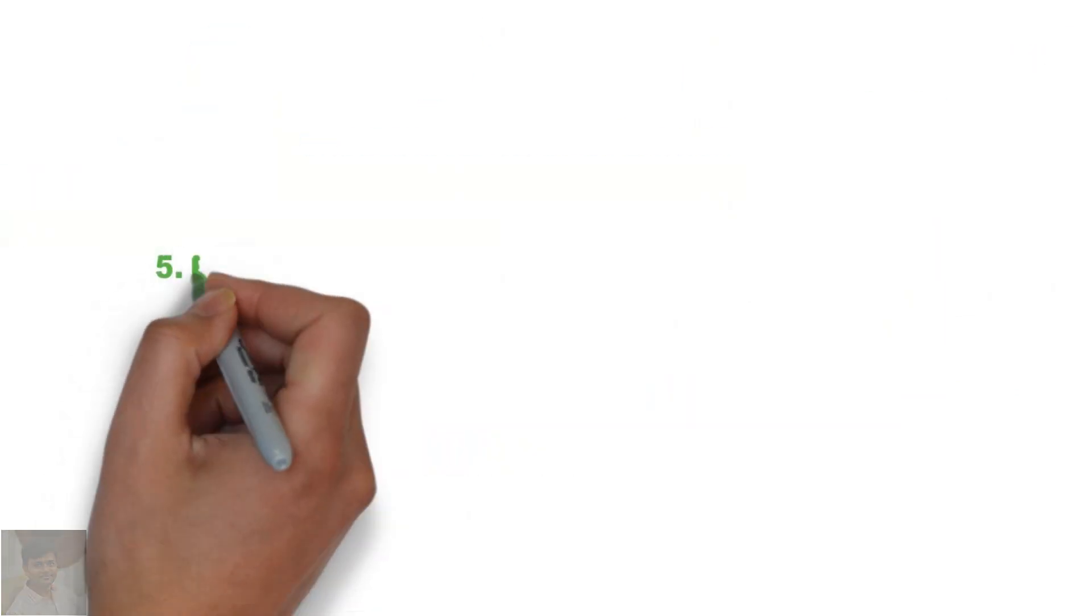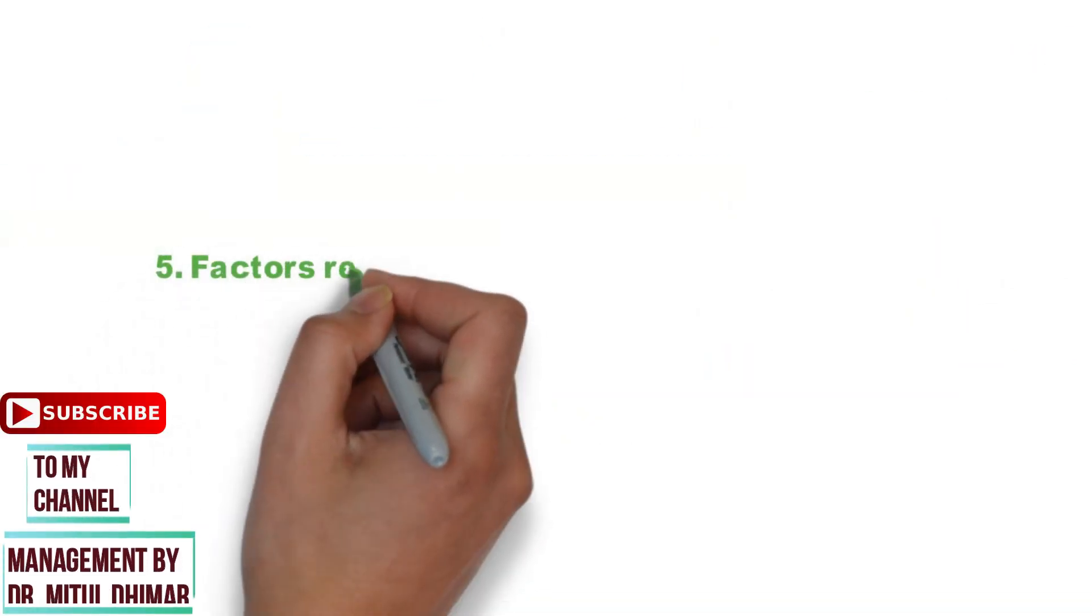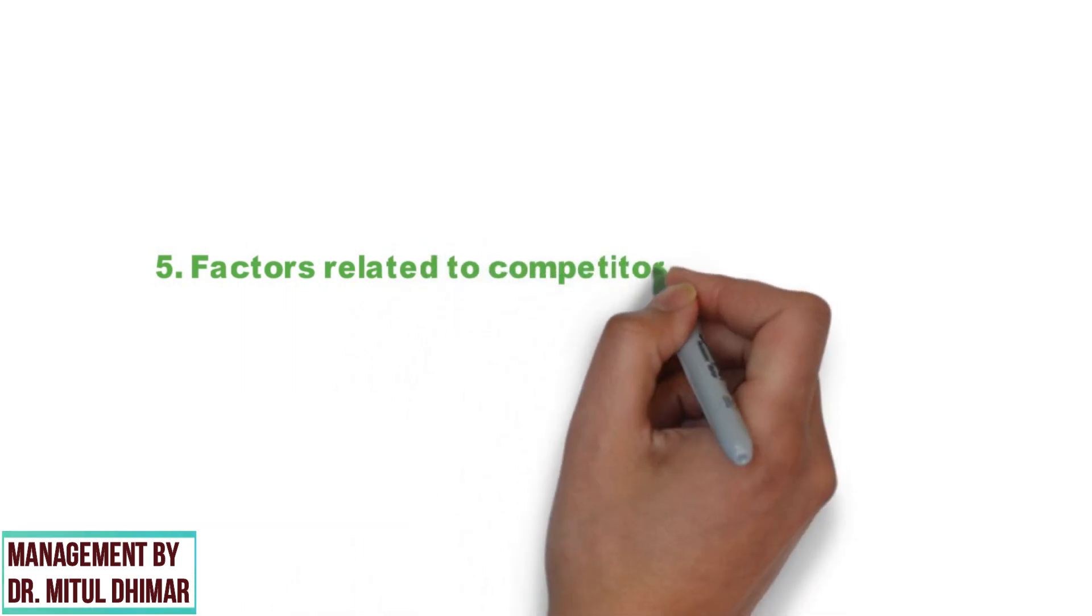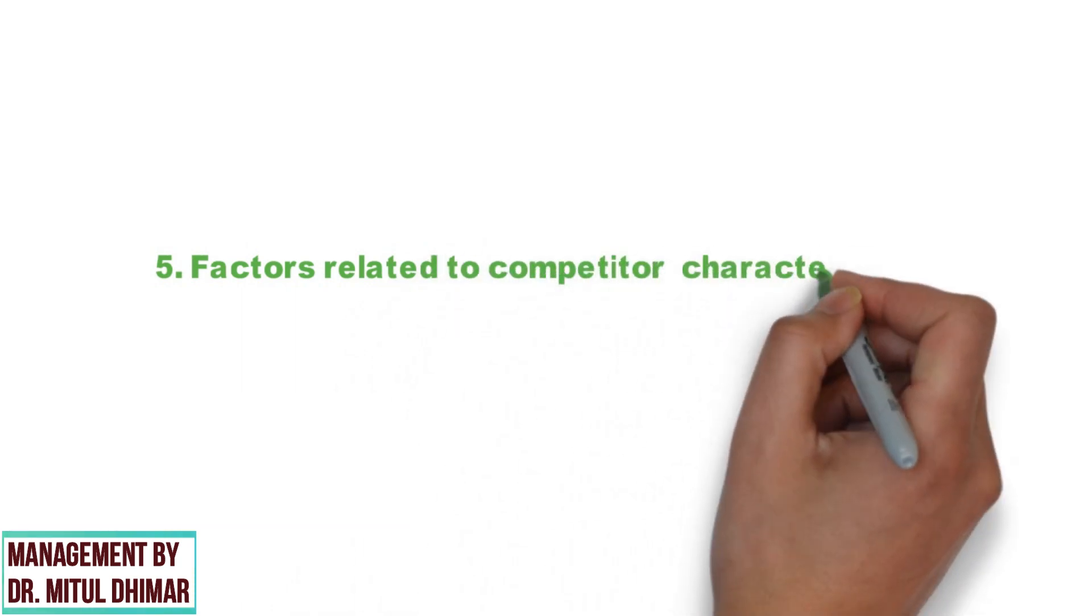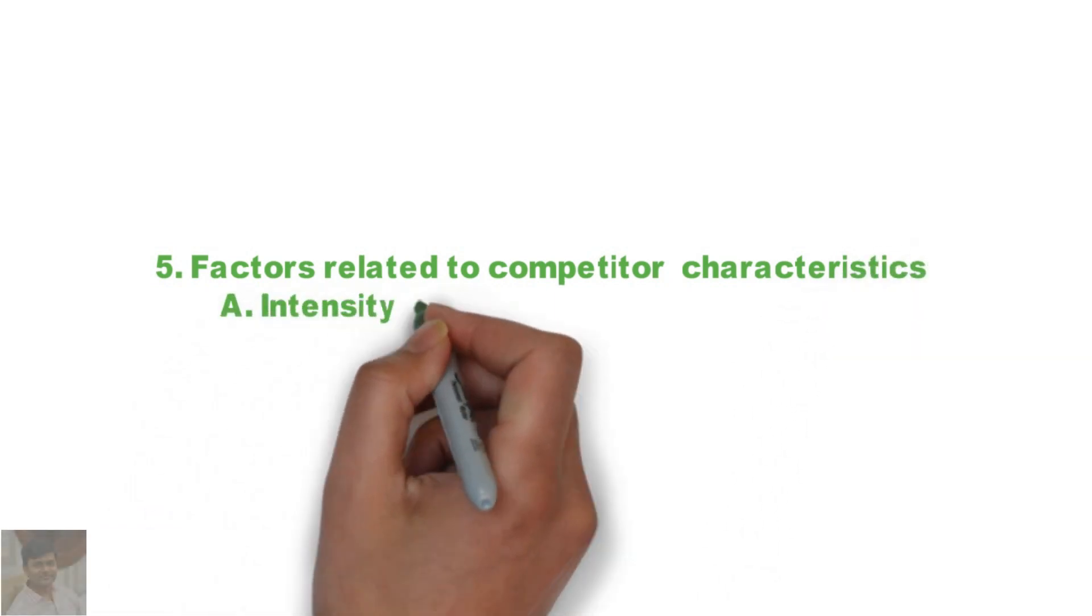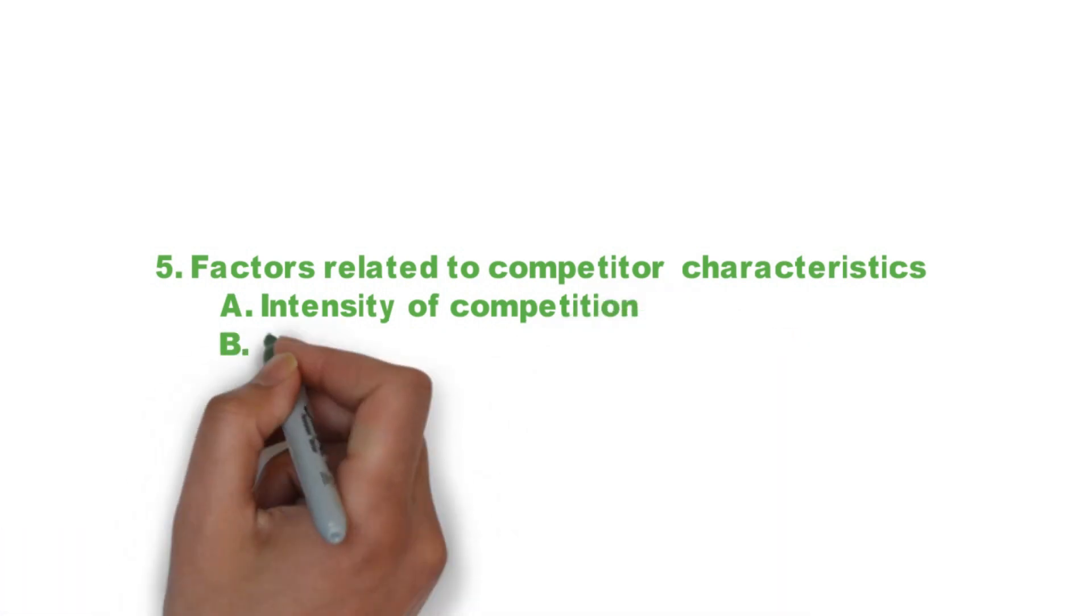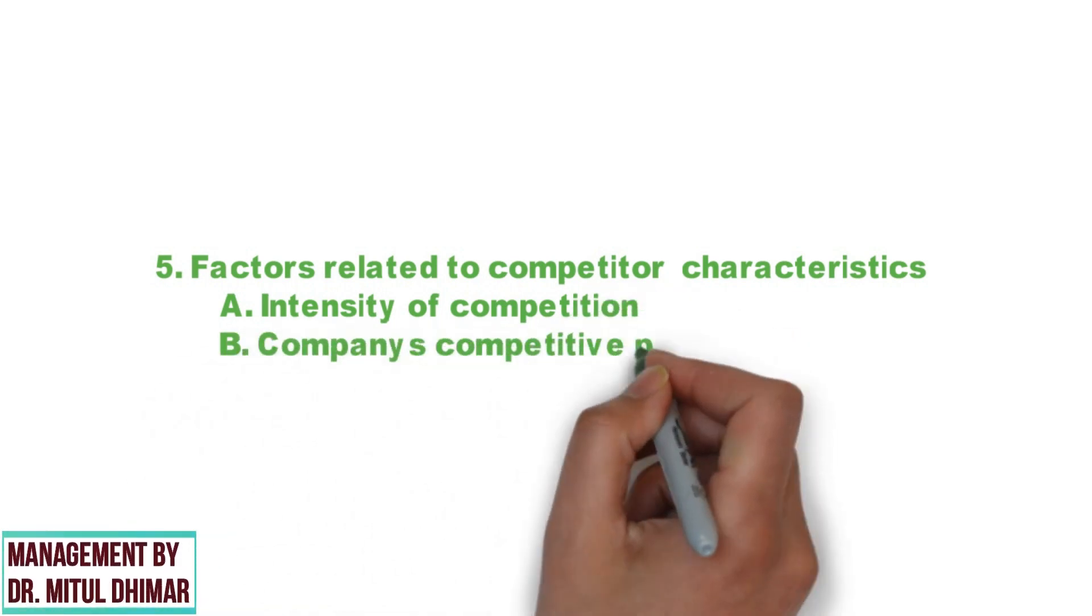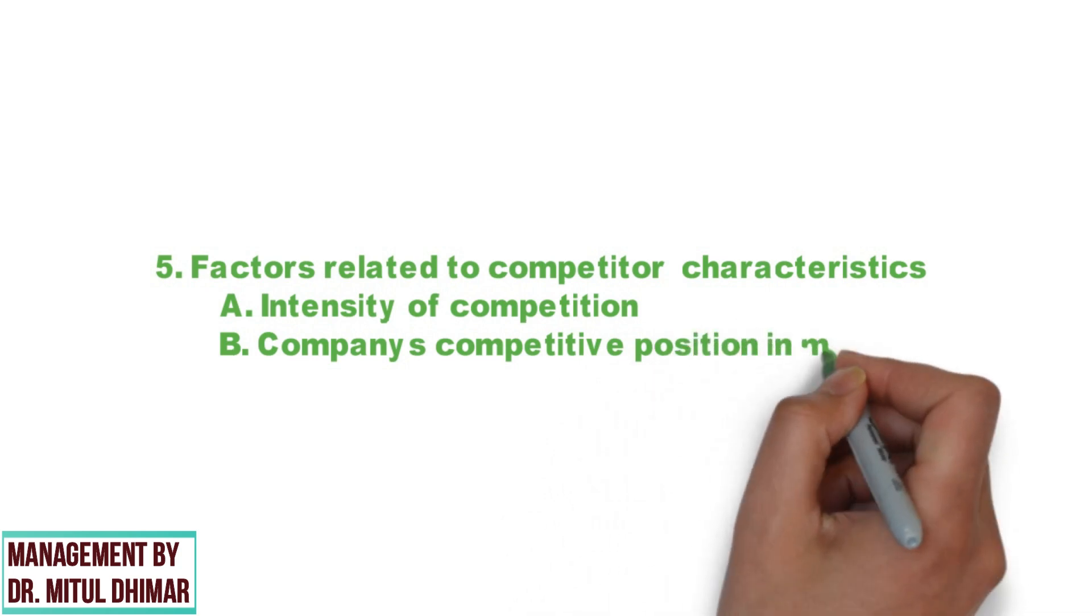Next factor is factors related to competitors characteristics. Current and future competition affects the company's decision on the marketing channel. Following two competitors characteristics we are going to study in detail: intensity of competition and company's competitive position in market.